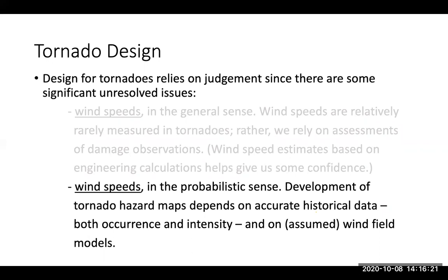With hurricanes, we tend to know when they occur, so we have a very good understanding of occurrence rates. We have anemometers that have measured wind speeds, at least onshore, so we can validate those models with data. The approach is similar for tornadoes, but the wind speeds haven't been directly measured — they've been assessed based on historical damage observations and assumed wind field models. All of this assumes we're actually capturing all the tornadoes that are occurring and that we have the right intensity estimates.